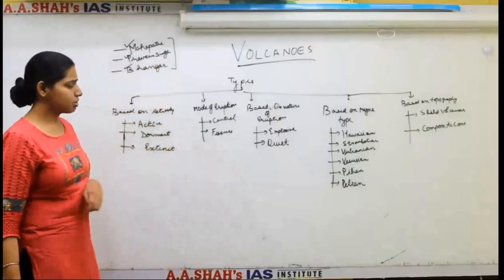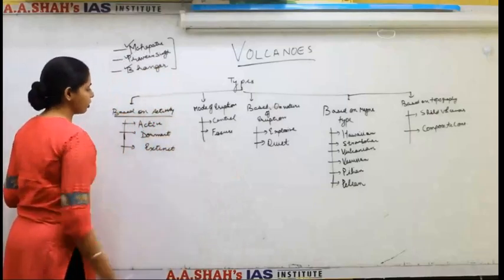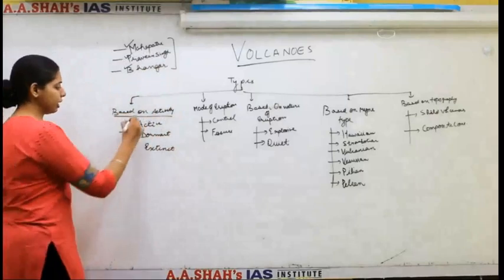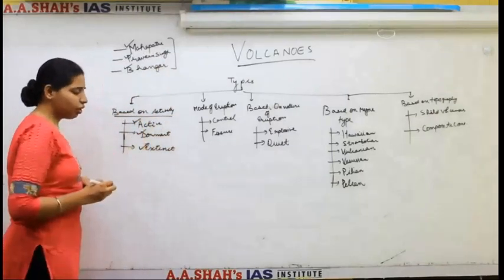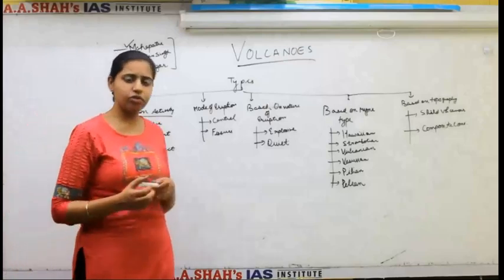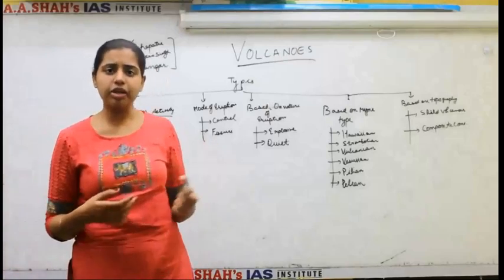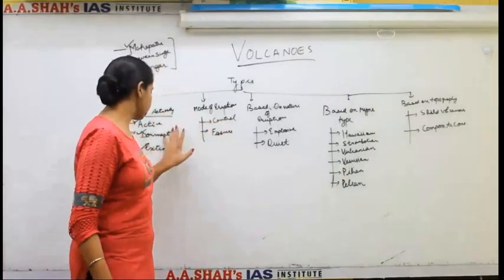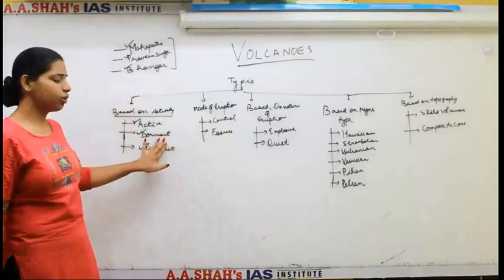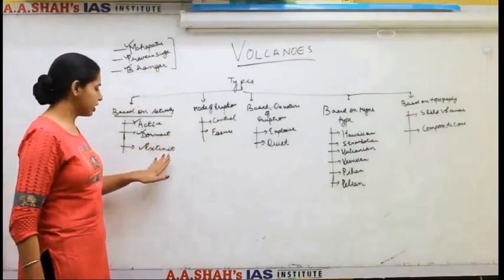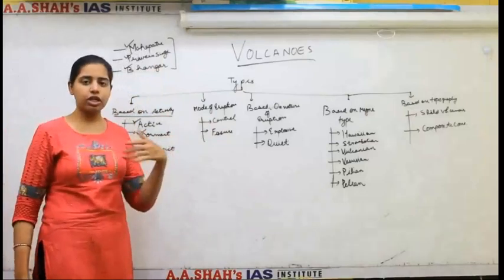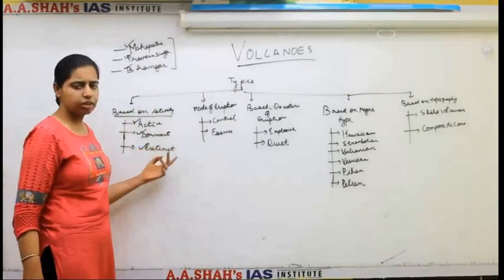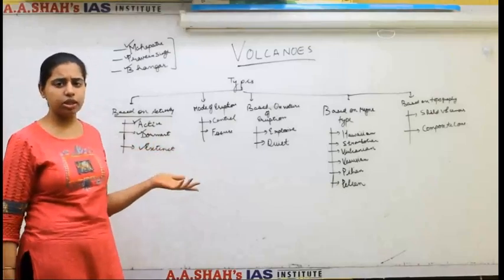Before we go on to the basic structure of volcanoes and the various types — based on the activity of the volcanoes, it is active, dormant, and extinct. Active volcanoes are those where eruptions have happened very recently and keep happening from time to time. Dormant volcanoes have not erupted for some period of time, whereas an extinct volcano is one where the last eruption happened a long, long time ago.